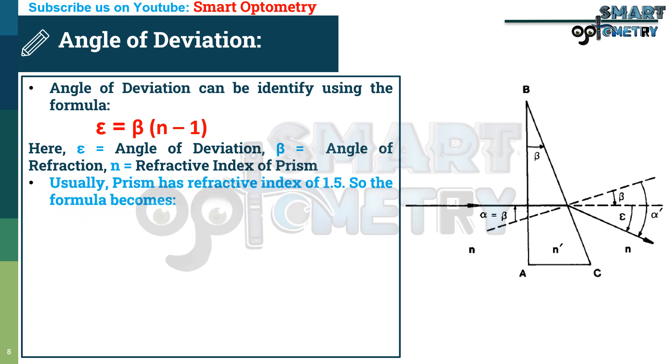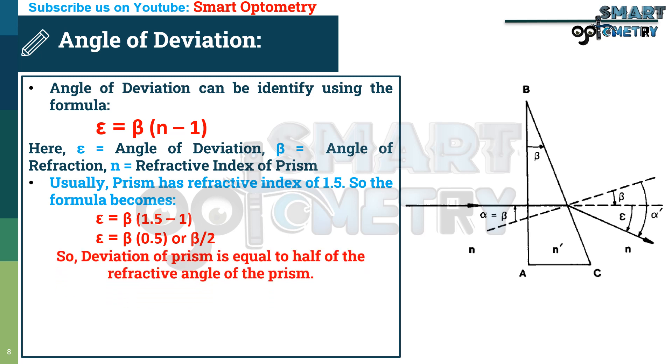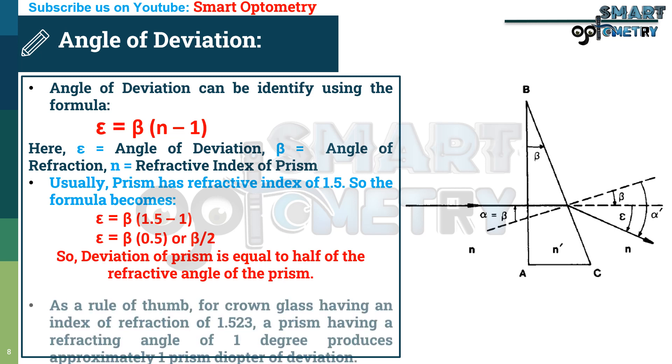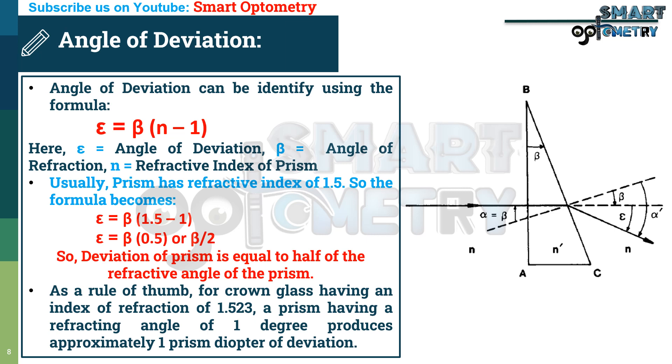Usually, prism has a refractive index of 1.5. So the formula becomes angle of deviation equal to beta multiplied by 1.5 minus 1, or angle of deviation equal to beta multiplied by 0.5 or half of beta. So the final outcome is angle of deviation of prism is equal to half of the refractive angle of prism. As a rule of thumb, for crown glass having an index of refraction of 1.523, a prism having a refracting angle of 1 degree produces approximately 1 prism diopter of deviation.